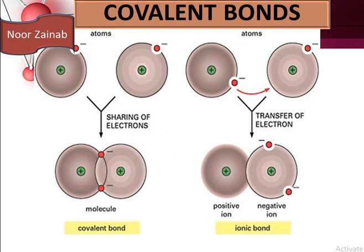Covalent bonds involve the sharing of electrons. In an ionic bond, an electron is transferred from one atom to another, and positive and negative ions are formed. Consequently, an electrostatic force is generated which binds these ions together.